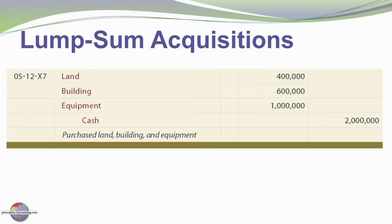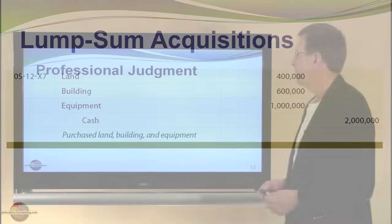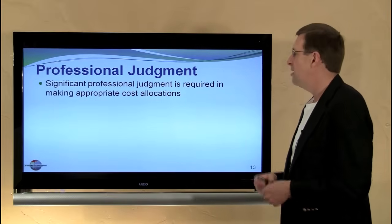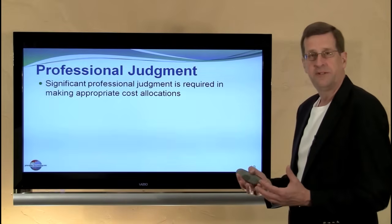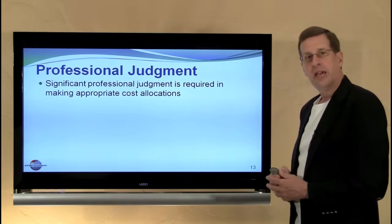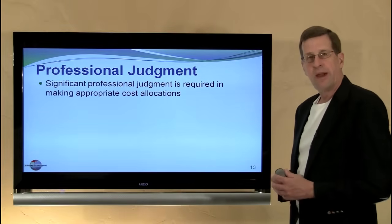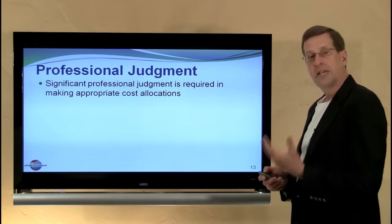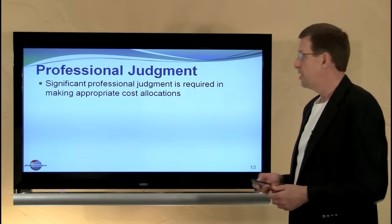So we've come up with our cost assignment of $2,000,000, and here's the journal entry to reflect that. The credit to cash of $2,000,000 results in debits to land, buildings, and equipment for their respective amounts — 80% of the fair value of each. Recognize that professional judgment is required to make these allocations. The determination of fair value of the components can involve complexity, subjectivity, and a significant amount of professional judgment.